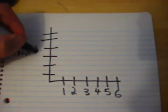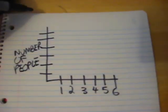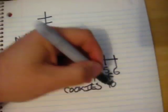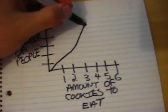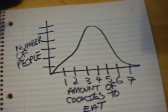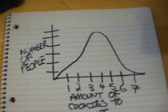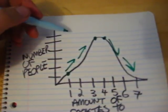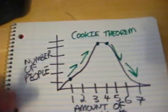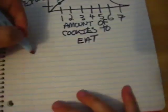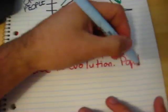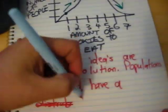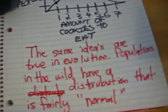My favorite example: imagine a group of people all offered some cookies. How many will they eat? I want to eat one, maybe two, but around three cookies I start to feel a little sick. That's why around the four or five range, most people stop eating cookies — you can eat up to a certain point, but after a while you just don't want any more. I call this the cookie theorem.